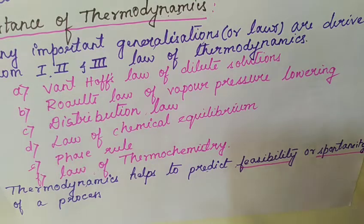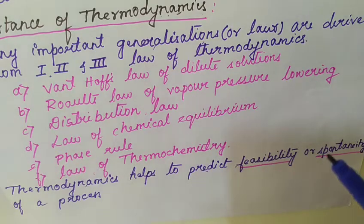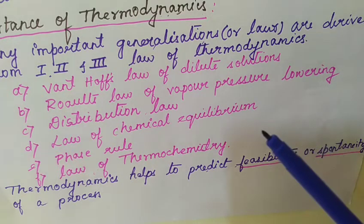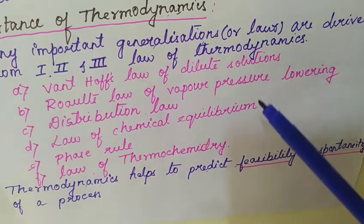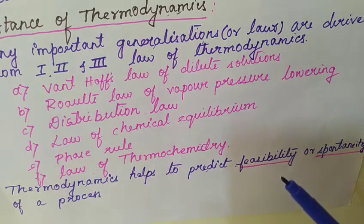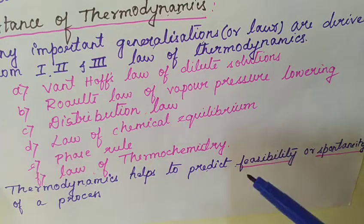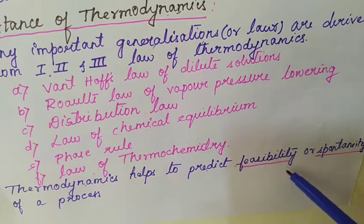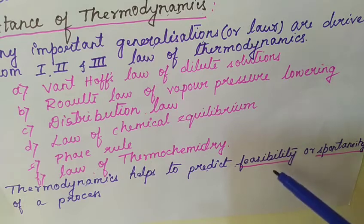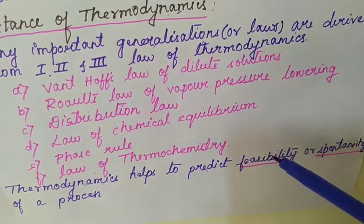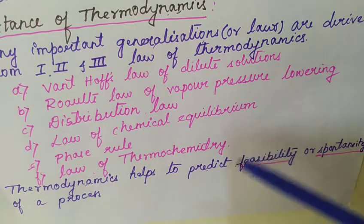Thermodynamics helps predict the feasibility or spontaneity of a process. To analyze any chemical reaction, we need two important concepts: chemical kinetics and the thermodynamic aspect. The kinetic aspect tells the rate of the reaction — whether it is fast, slow, or moderate. Using thermodynamics, we can predict the spontaneity or feasibility of the reaction, meaning whether any reaction occurs on its own or not. That is the main advantage of thermodynamics.